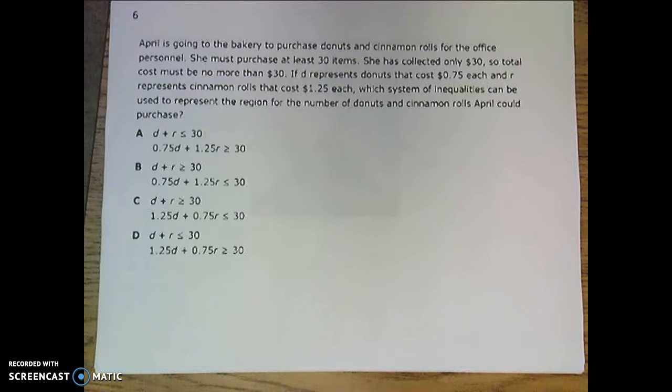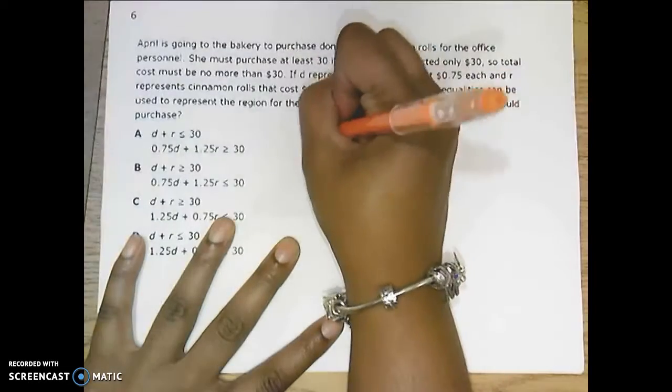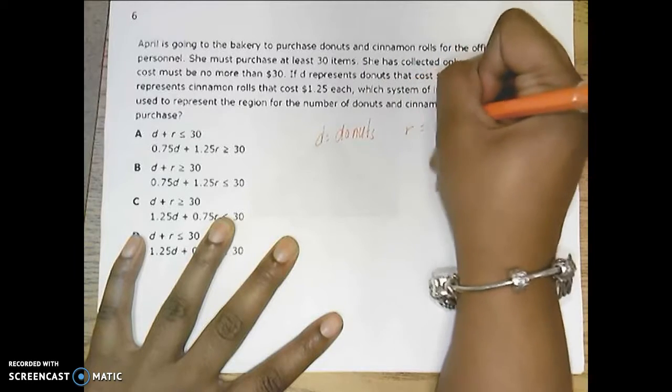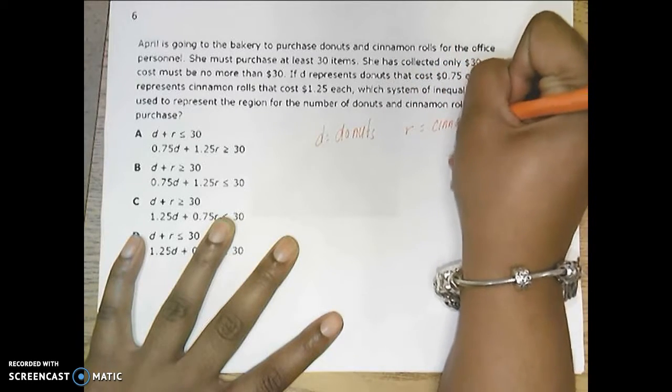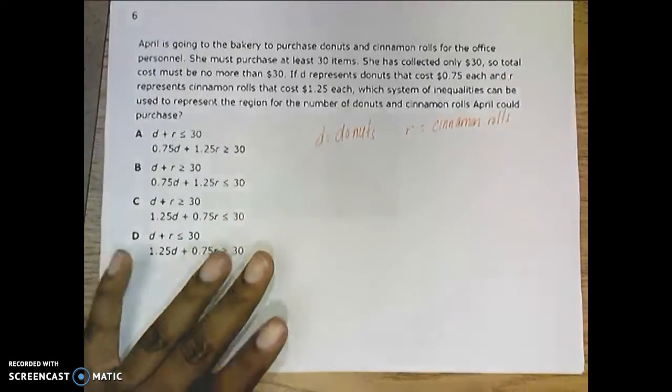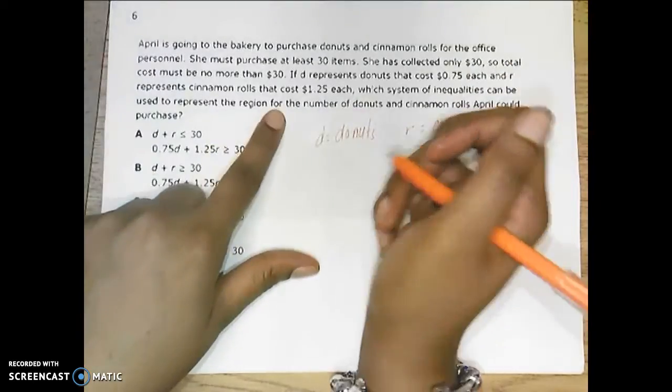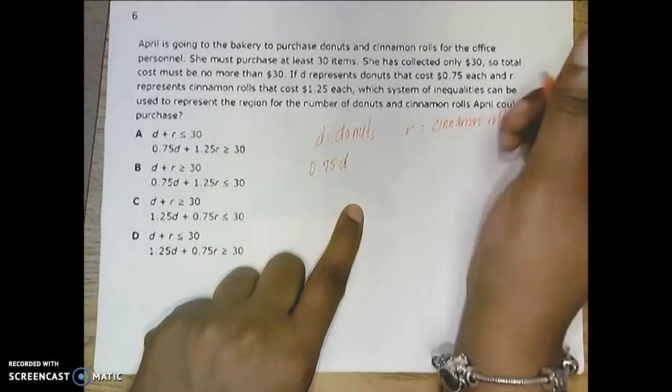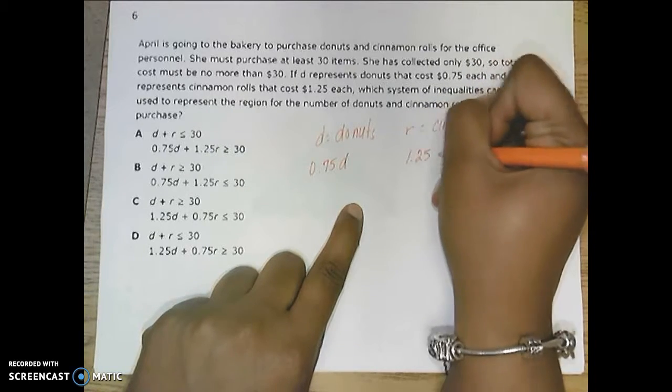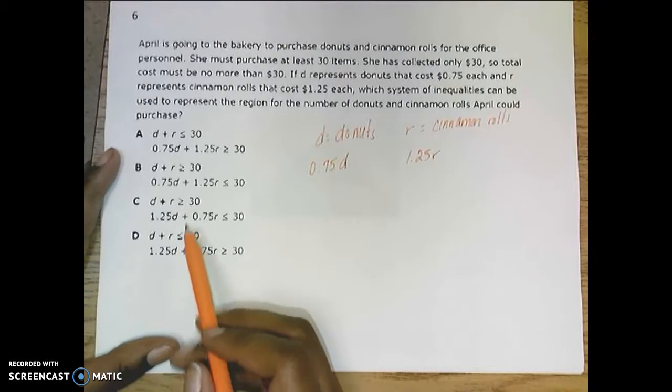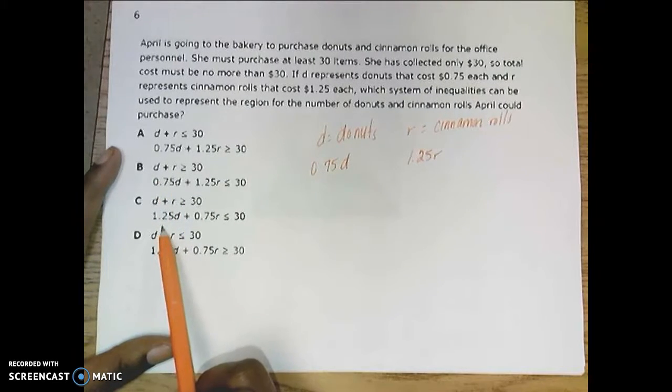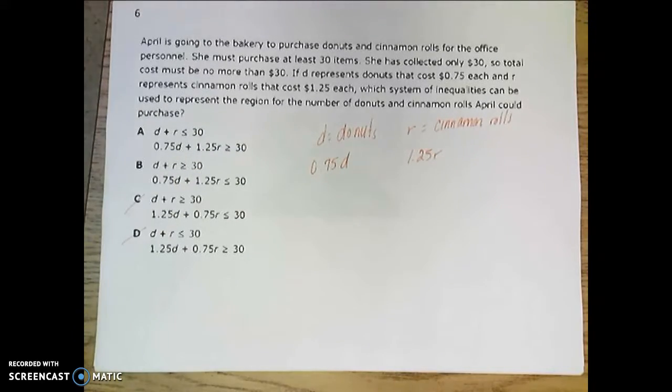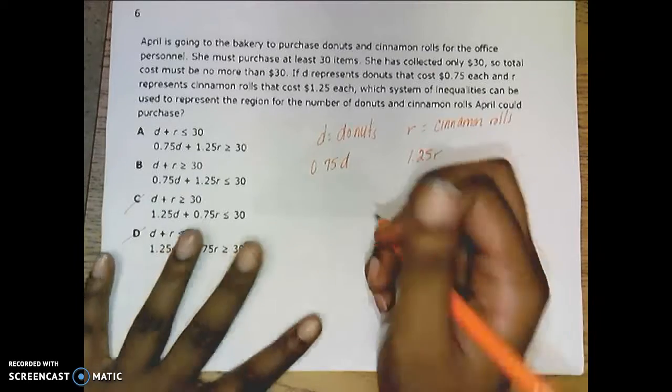D represents donuts and R represents cinnamon rolls. A donut costs $0.75 per donut and a cinnamon roll costs $1.25 per roll. So you can look over here and look at the values that they have. This one has $1.25 per donut. Not true. We do know that she needs to get 30 items.